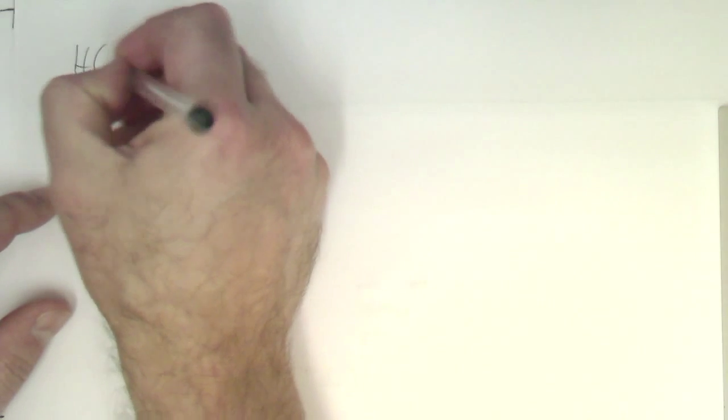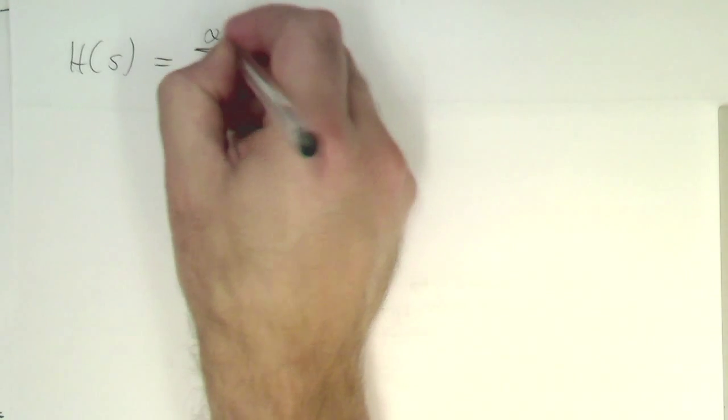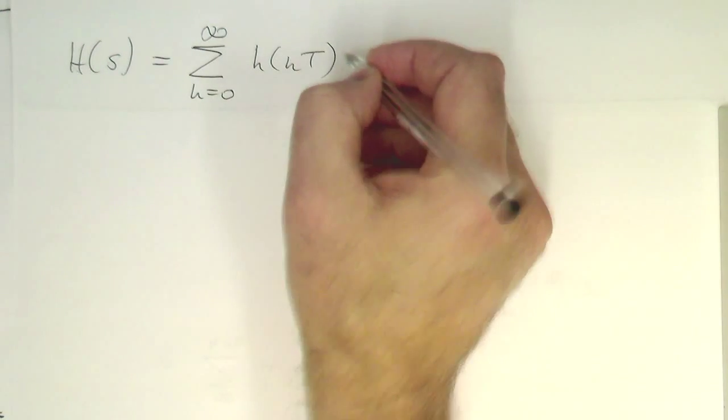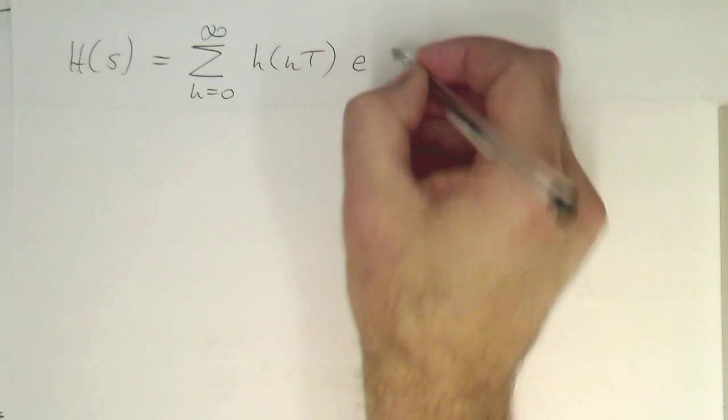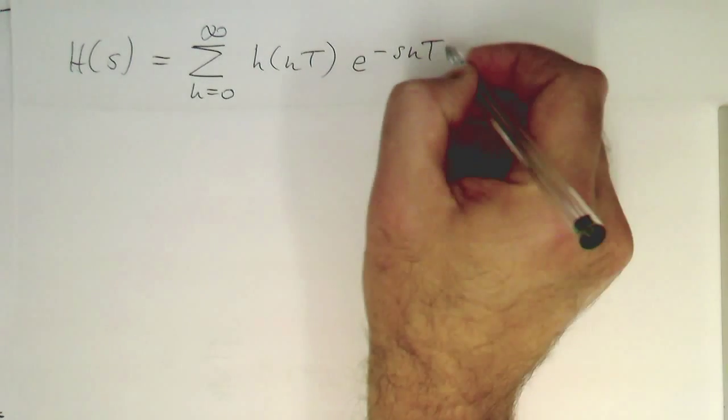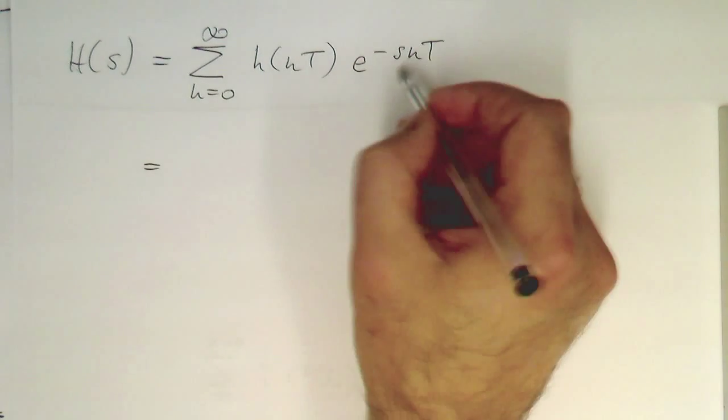Let's write this here, our H(s). Again, this is sum. Let's do this properly here. H(nT), because we're looking at these moments in time. And then multiplied e^(-snT).